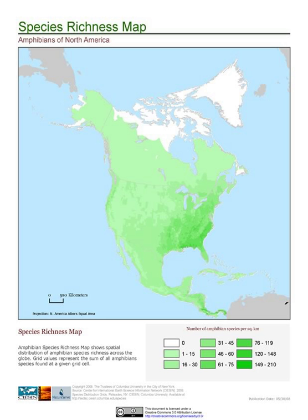In biology, the range of a species is the geographical area within which that species can be found. Within that range, distribution is the general structure of the species population, while dispersion is the variation in its population density.